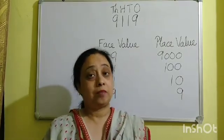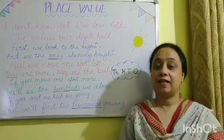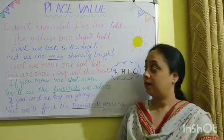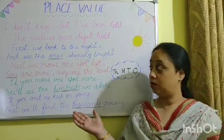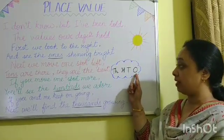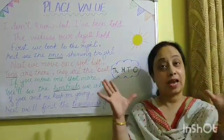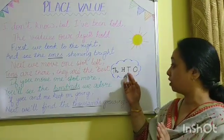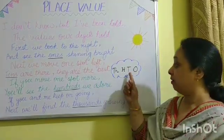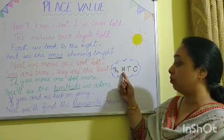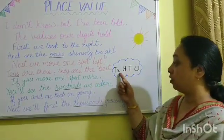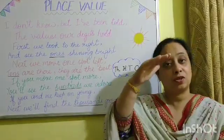Do practice more until you get them all correct. Now let's have some fun — we are going to recite the place value chant. I don't know what I've been told, the values are digits whole. First, we look to the right and see the ones shining bright. Next, we move one spot left — tens are there, they are the best. If you move one spot more, you will see hundreds we adore. If you keep on going, next we'll find the thousands growing.